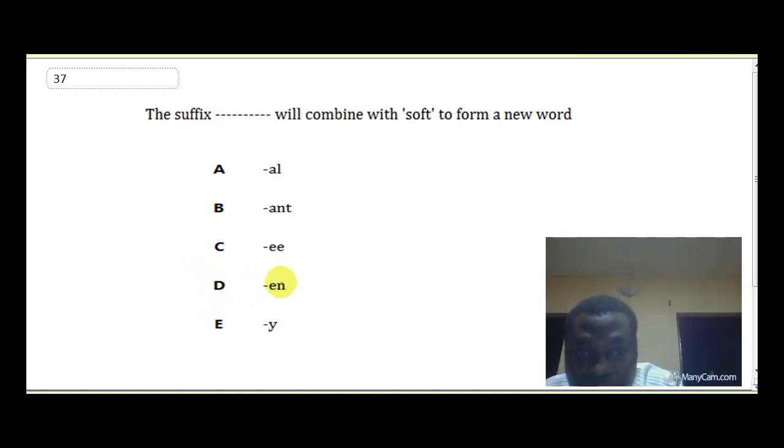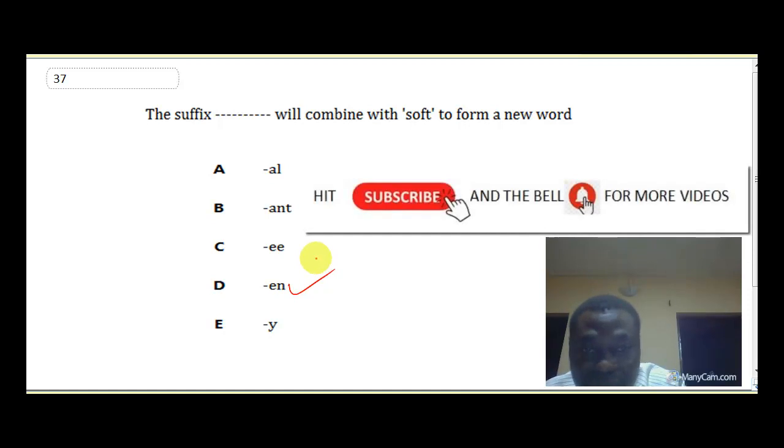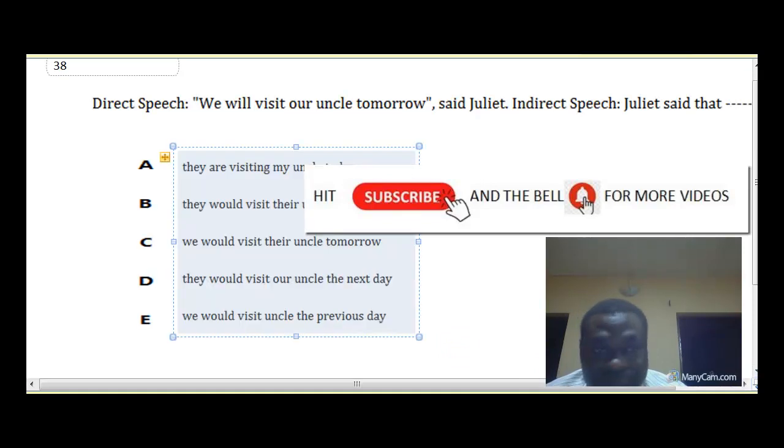So the right suffix here is option D, soften. When you soften something, you make it soft. Right?